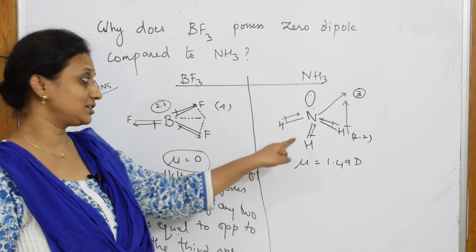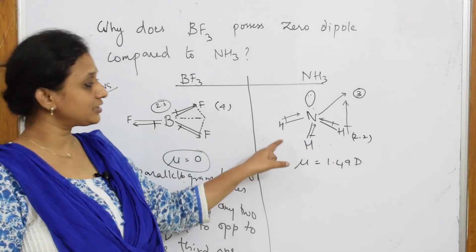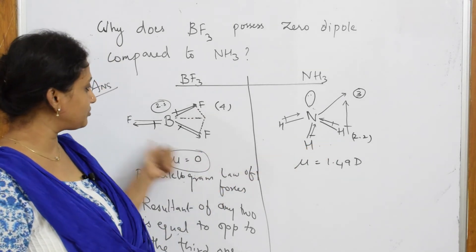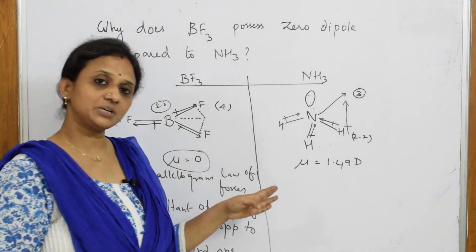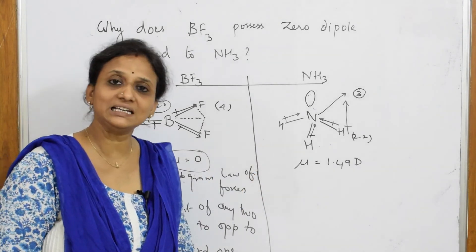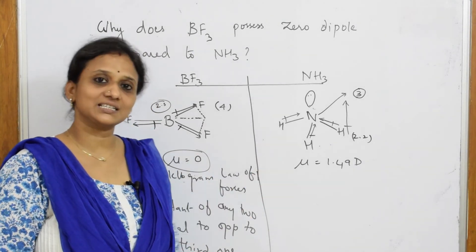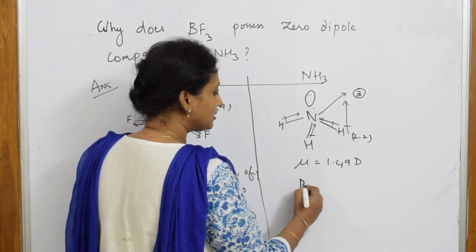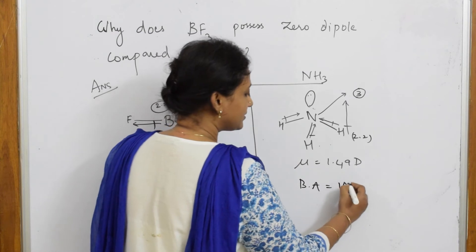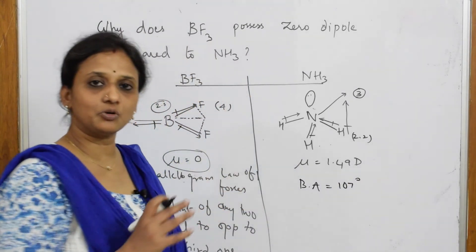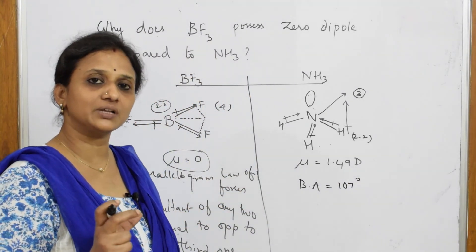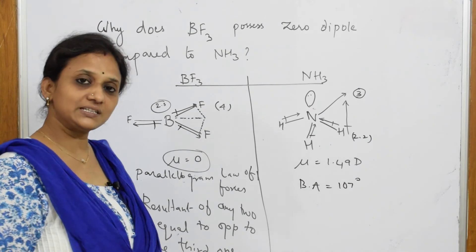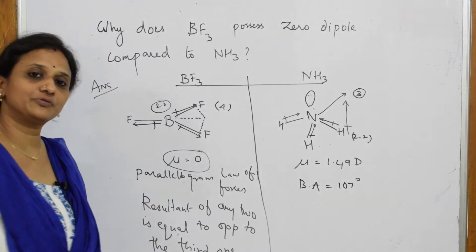Here it is in this geometry, dipole moment has become zero, but here it is in this geometry. Here also we have three atoms, here also we have three atoms, but because of the shape of the molecule, the dipole has completely changed. The bond angle here is almost 107 degrees, giving a particular geometry to that.